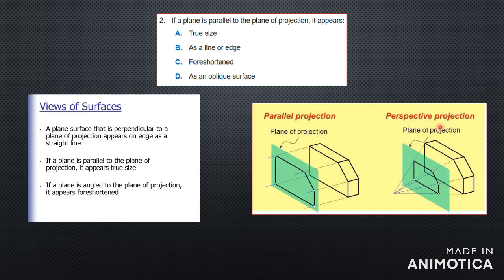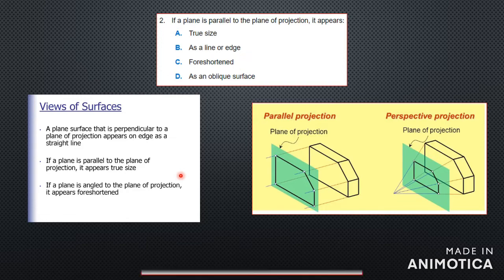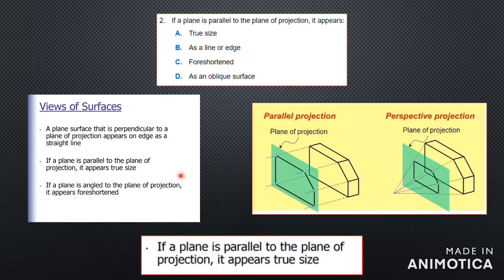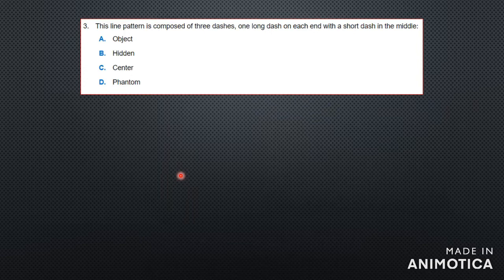Looking at perspective projection, the object is at an angle, so the projection would be smaller — foreshortened — because the measurements are not true to size compared to the original object. So if a plane is parallel to the plane of projection, it appears in its true size.